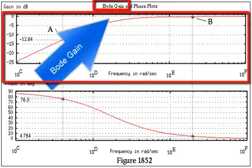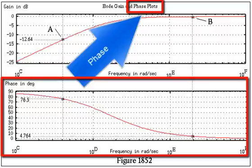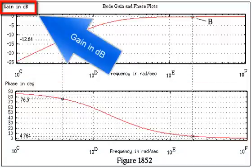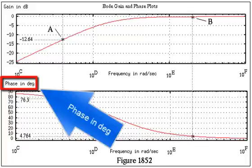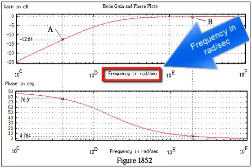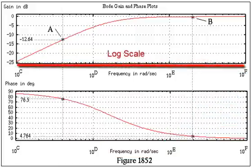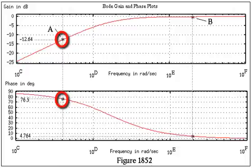The top plot is a Bode gain plot. The bottom plot is a Bode phase plot. That's gain in dB on the vertical axis. That's phase in degrees on the vertical axis. The horizontal axis is frequency in radians per second on both plots. The horizontal scale is a log scale.